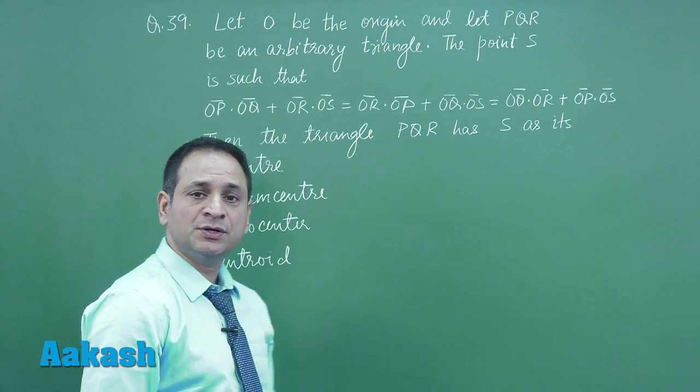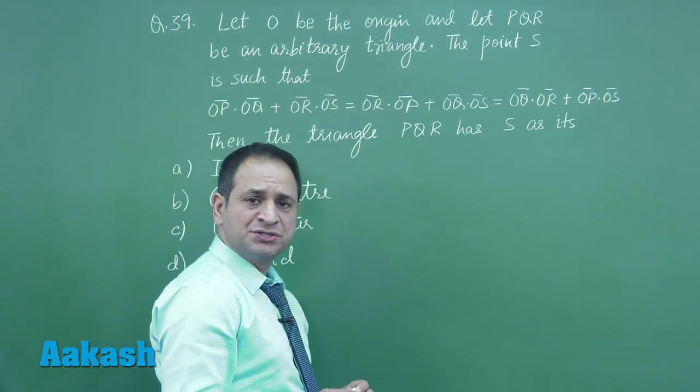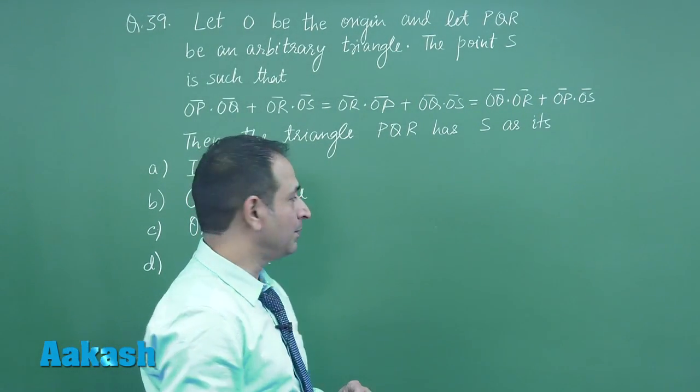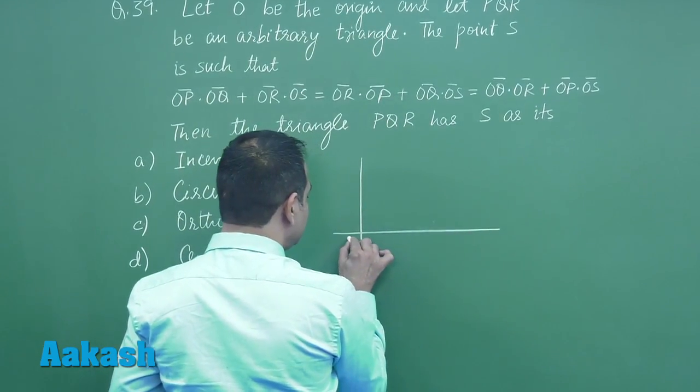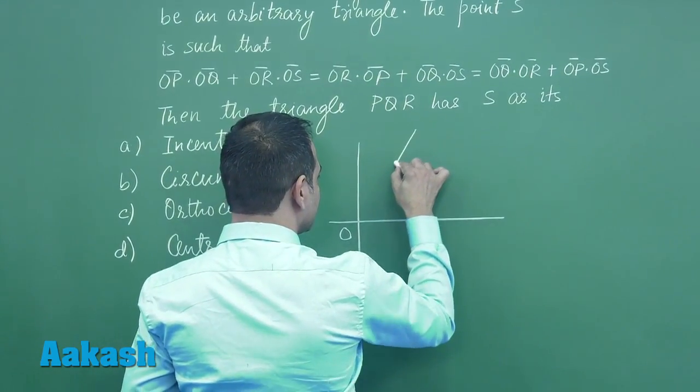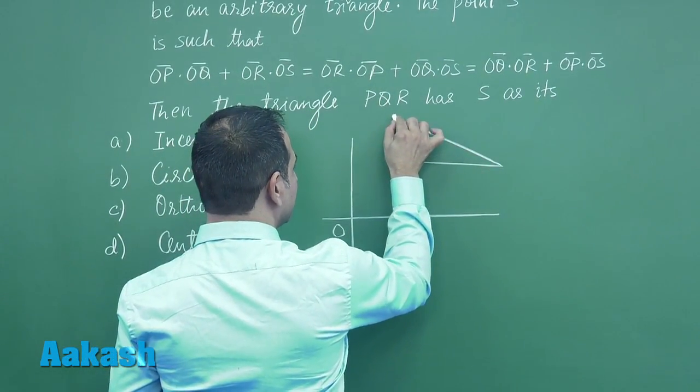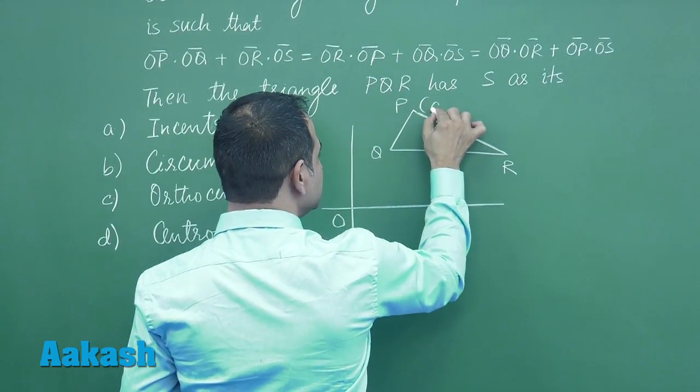...incenter, circumcenter, orthocenter, or centroid. Let's see - the question looks typical but it is actually a very easy problem. Let us see here, we are constructing a triangle. O is here. This is an arbitrary triangle I've taken. This is P, this is Q, and this is R.